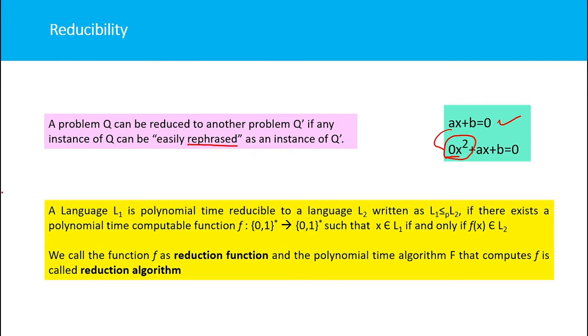Formally, a language L₁ is polynomial time reducible to another language L₂, written as L₁ ≤ₚ L₂. This p means we are reducing it in polynomial time. The reducibility must happen in polynomial time.